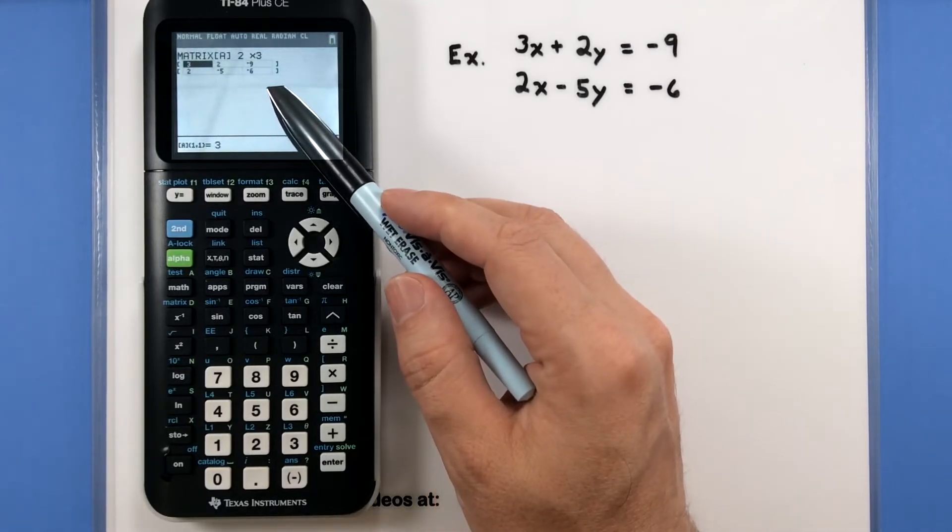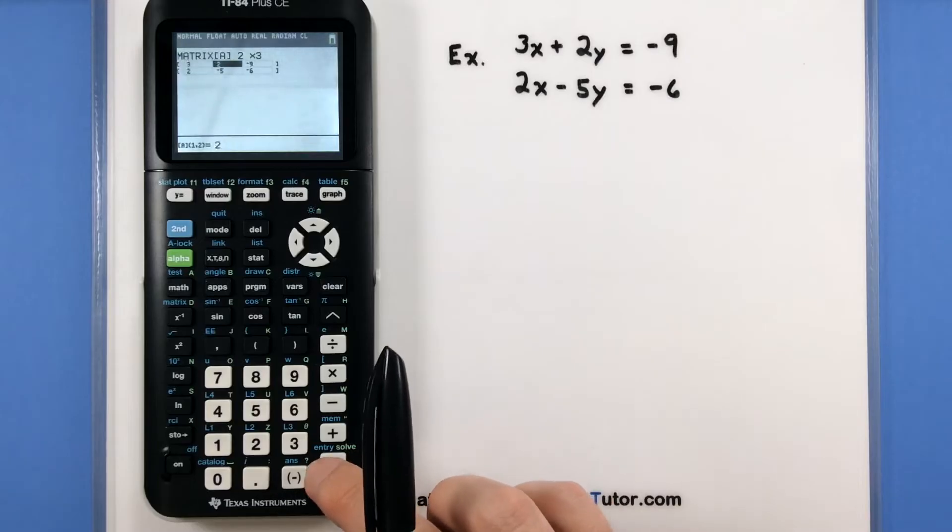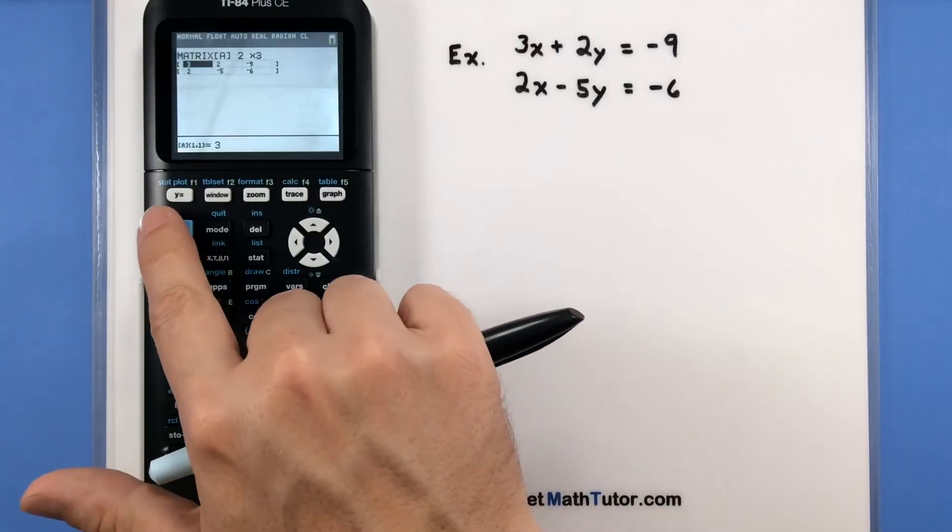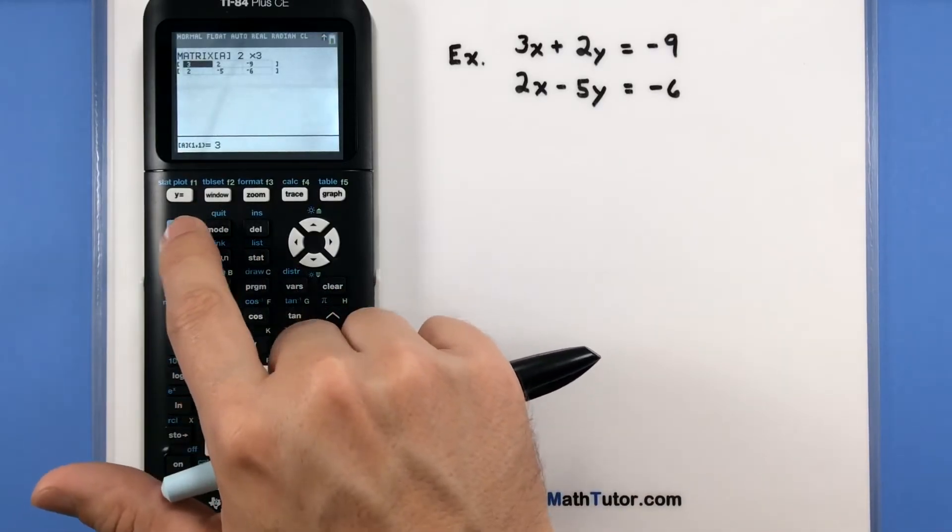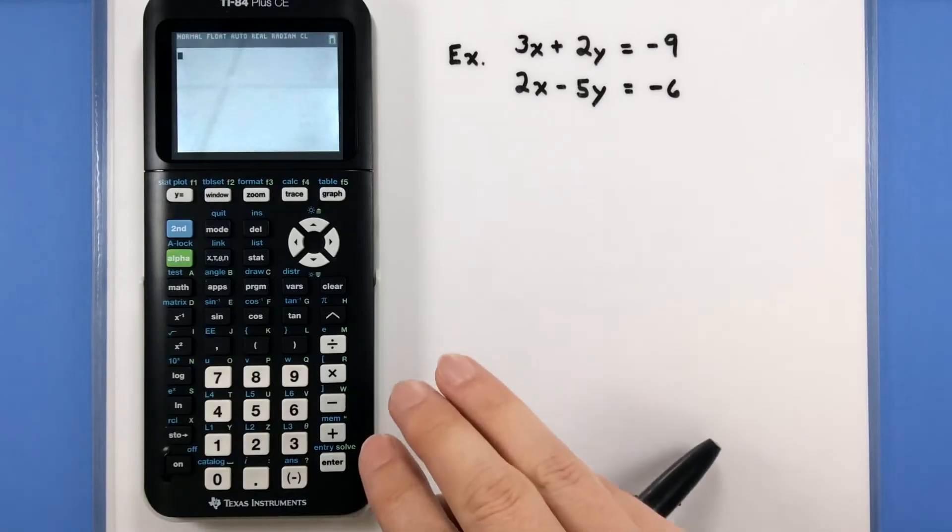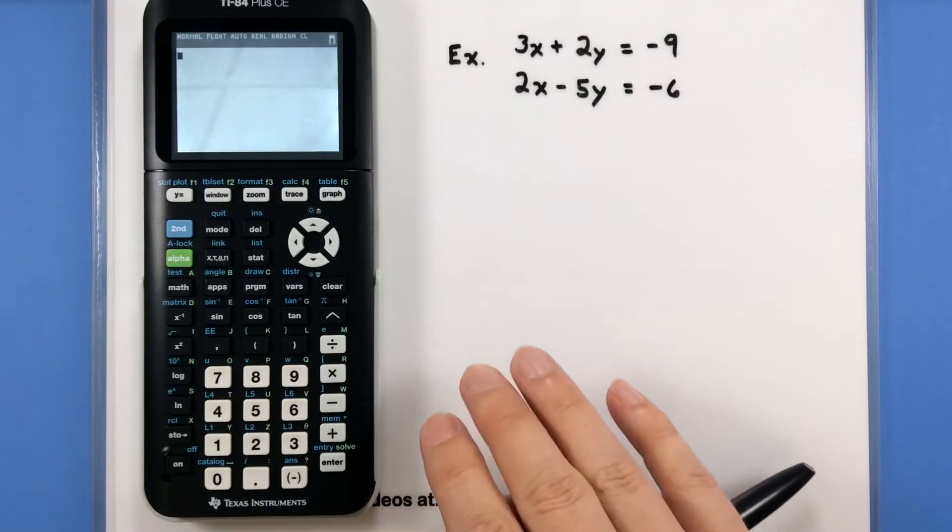The good news is that is stored inside there. You can keep pressing enter, and it will not take you out of this screen. To get back to where we actually need to go, go ahead and press second, quit. Now we're back on the home screen. So the matrix is in the calculator. It's stored. It's nice and safe.